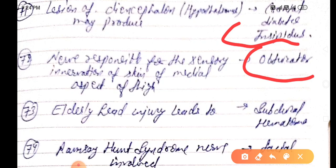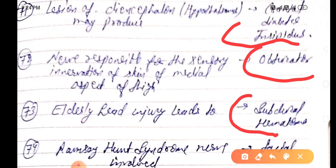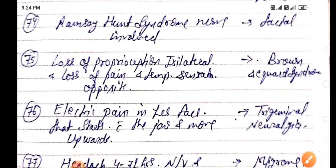Elderly head injury leads to subdural hematoma. Ramsey Hunt syndrome: nerve involved is facial nerve, seventh cranial nerve.